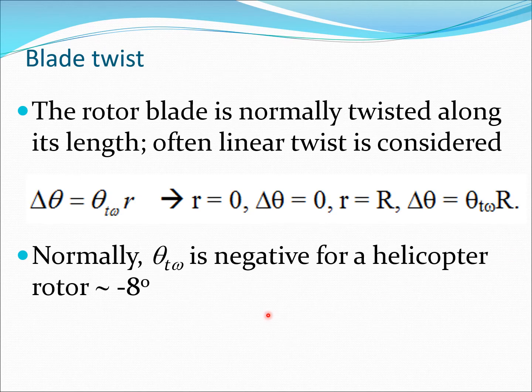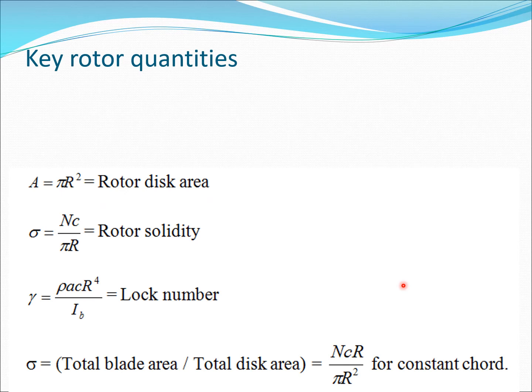The rotor blade is normally twisted along its length, and often linear twist is considered. We would have delta theta equals theta twist times r. This means that if r is zero, delta theta would be zero. If r is capital R, meaning you are at the tip, then delta theta becomes theta tw times R. Typically theta tw is negative for helicopter rotor, about minus 8 degrees. It's reasonably twisted but much less twisted than, for example, a propeller blade would be.